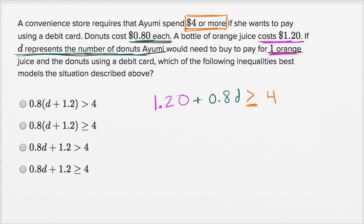So let's see, which of these choices describe that? If 0.8D plus 1.2 is greater than four, before you even see if this expression is equivalent to this expression, you can see this is greater than four. We want to be greater than or equal to four, so just like that, you could rule this one out. And actually, if you distribute the 0.8D, you will see that you get something different. You get 0.8D, and then 0.8 times 1.2 is not $1.20, so we can rule that one out.